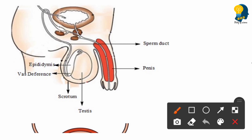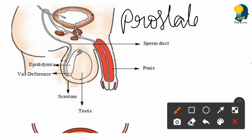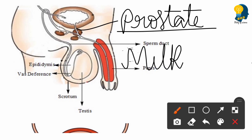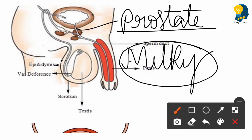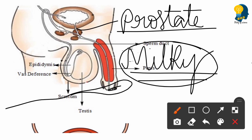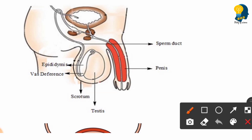Now let's understand the glands present in the human male reproductive organ and their functions. The first gland is the prostate gland. It produces a milky fluid that helps in sperm mobility — meaning it helps the sperms move easily. In order for sperms produced by the testis to move easily, the prostate gland produces this milky fluid.